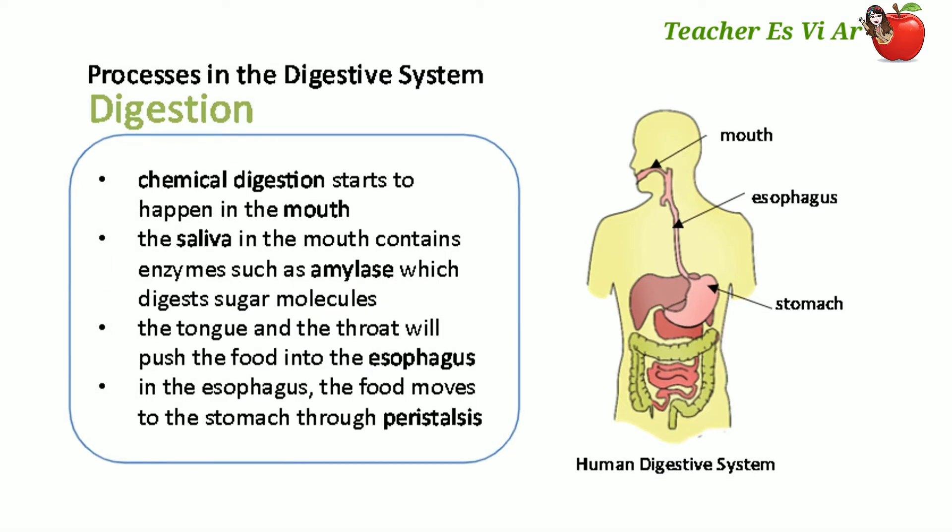Chemical digestion starts in the mouth. The saliva in the mouth contains enzymes such as amylase, which digests sugar molecules. Afterward, the tongue and the throat will push the food into the esophagus. In the esophagus, the food moves to the stomach through an involuntary muscular movement called peristalsis.